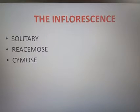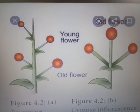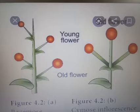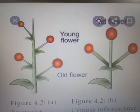In racemose inflorescence, the inflorescence axis grows continuously. The flowers show acropetal succession. Acropetal succession means the old flower is at the base and the young flower is at the tip.